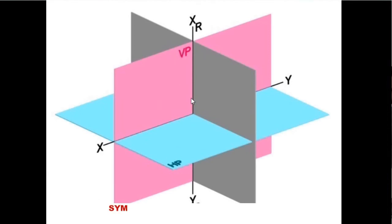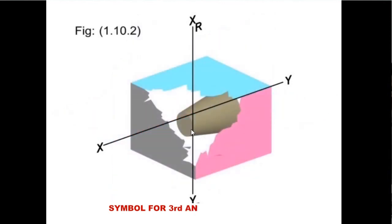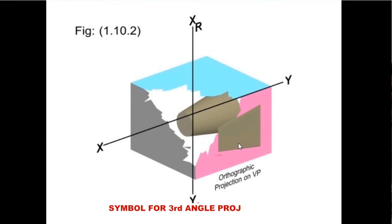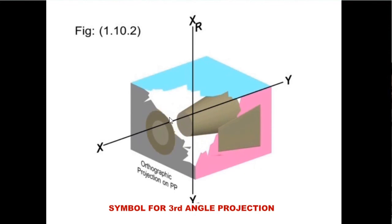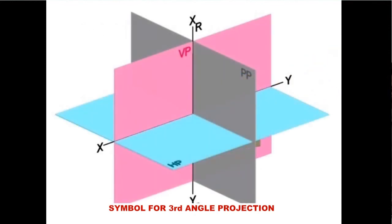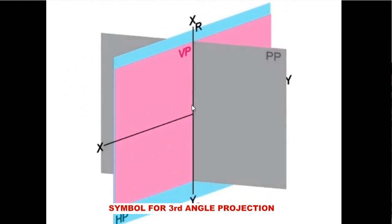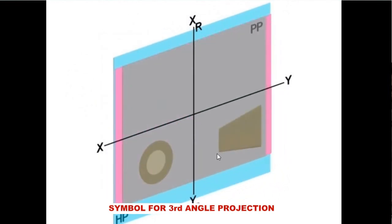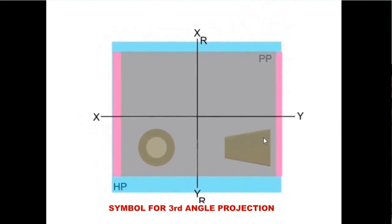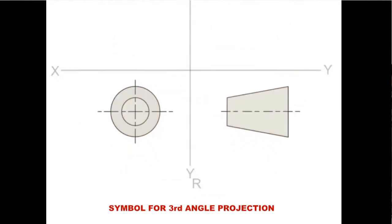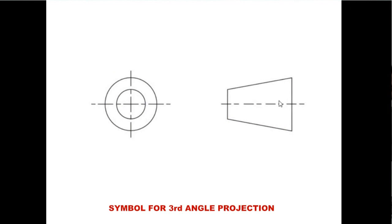Now consider the frustum of a cone in the seventh octant. The frustum of a cone is in the seventh octant. That left side view is getting at the left side of the main front view itself. This is the symbol for the third angle projection.